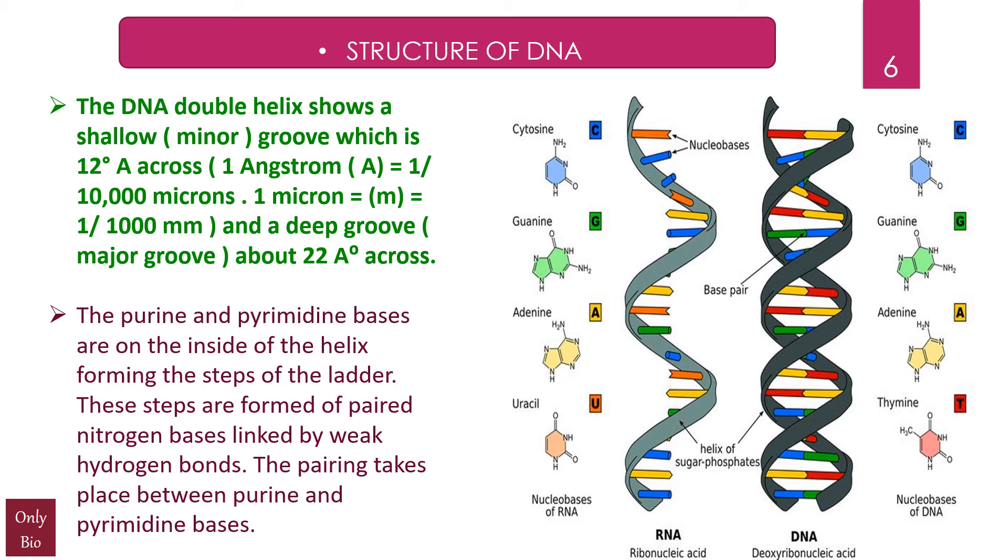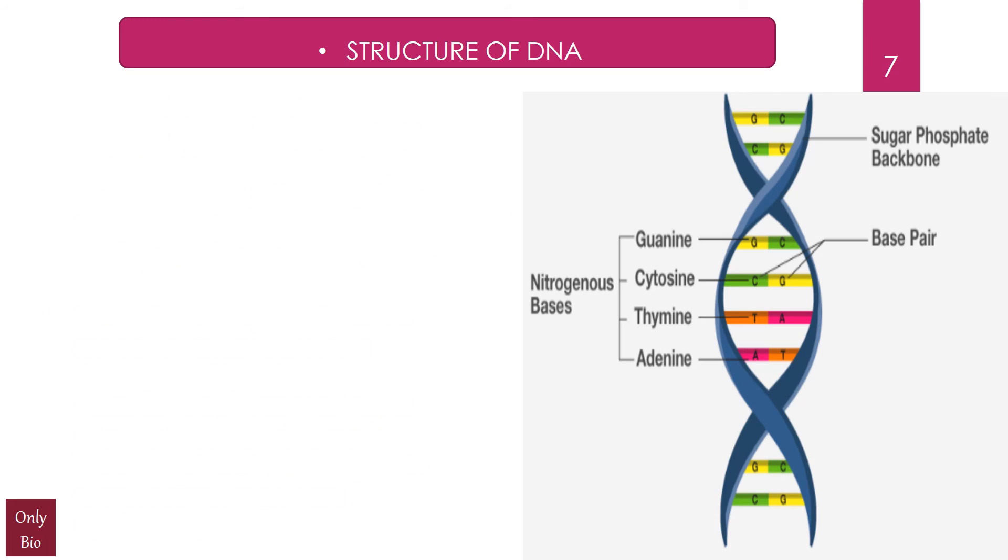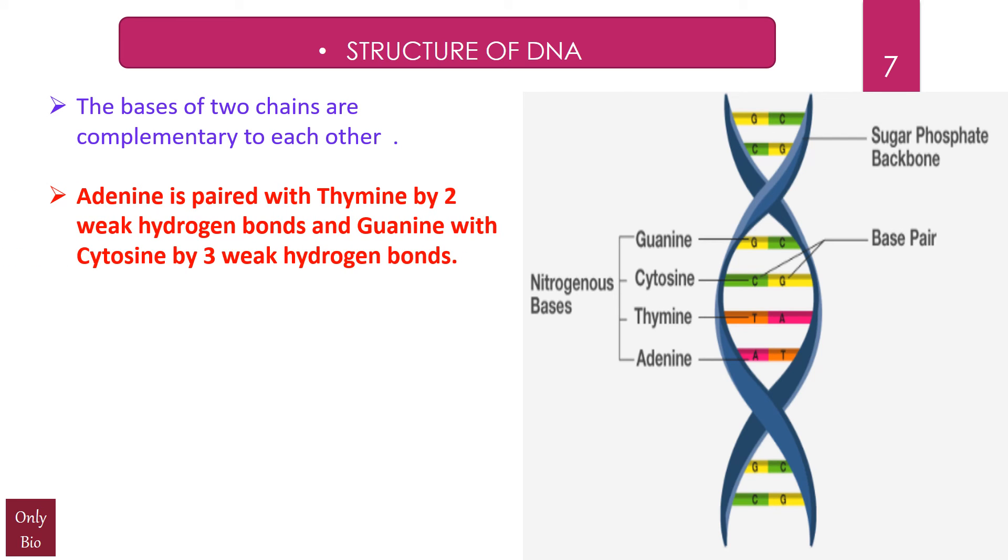Similarly, if in one strand we have guanine, that's a purine, on the opposite strand exactly opposite to it is going to be cytosine, which is a pyrimidine. The bases of the two chains are complementary to each other. Adenine is paired with thymine by two weak hydrogen bonds, and guanine is paired with cytosine by three weak hydrogen bonds.